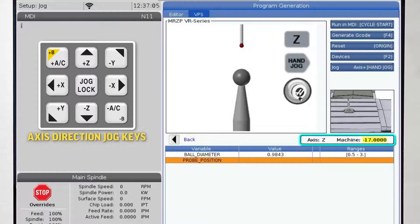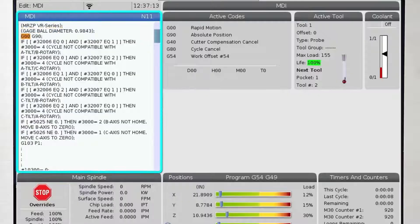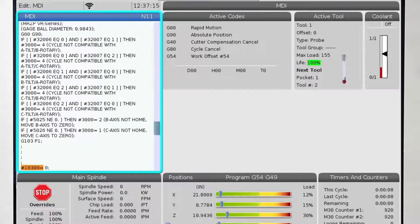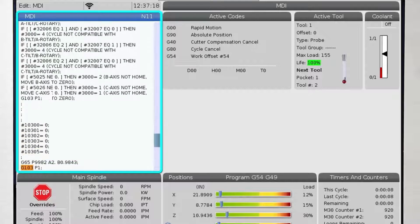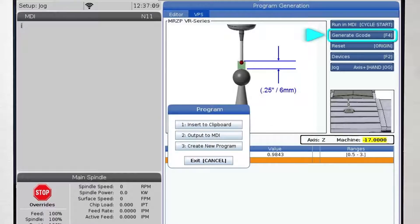With the probe in position, look at the available functions in the upper right corner of the template. I can press cycle start to run the probe cycle in MDI. The code is immediately written to MDI and the program begins to run. The other option is to press F4 instead of cycle start. This will generate the code and allow you to either insert the G code to the clipboard, output the G code to MDI, or create a new program. I usually press cycle start to run immediately.